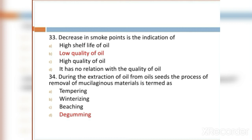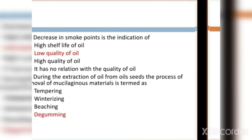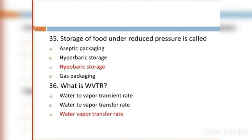MCQ 34: During the extraction of oil from oil seeds, the process of removal of mucilaginous material is termed as: Option A: tempering. Option B: wintering. Option C: bleaching. Option D: degumming. Option D, degumming, is the right answer.